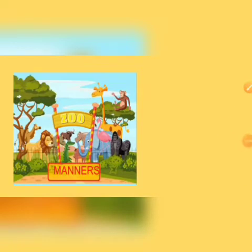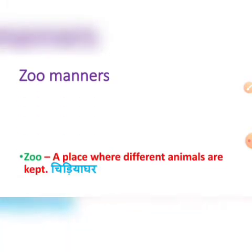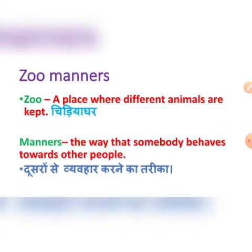This poem, 'Zoo Manners', is based on the theme of good manners in the zoo. Manners means behaviors. A zoo is a place where different types of animals are kept — 'churiya ghar'. Manners means 'dushron se behaar karne ka tariqa' — the way that somebody behaves towards other people.